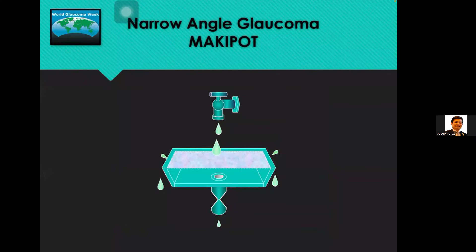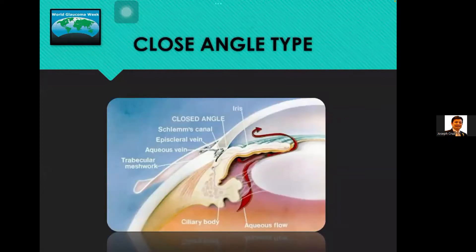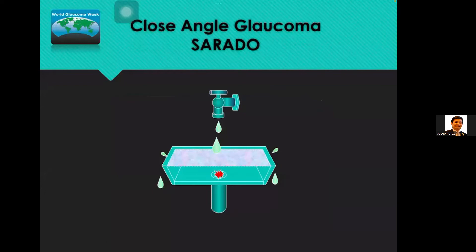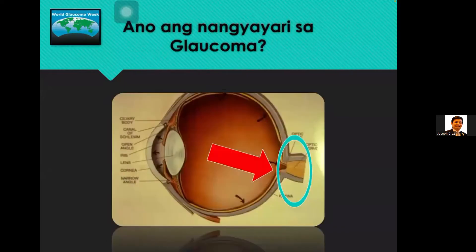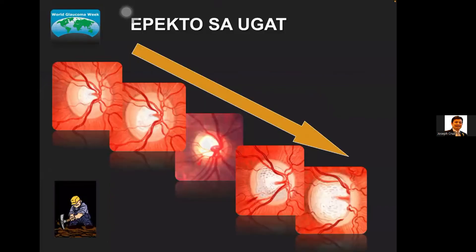In closed-angle type glaucoma, the drainage is completely shut. As I mentioned, the optic nerve is deformed — you can see it cupping, deepening, changing shape, and sustaining damage. Looking at the progression of optic nerve images from upper left going down, we can see the nerve getting paler and paler, and the cup deepening — meaning the nerve is thinning.